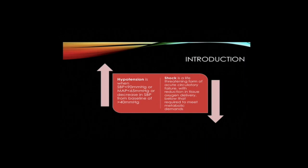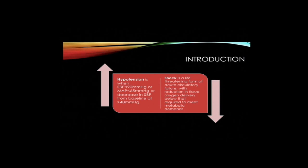Shock is a life-threatening form of acute circulatory failure in which there is reduction in tissue oxygen delivery below that required to meet metabolic demands. This imbalance in oxygen delivery and demand results in tissue hypoxia and lactate acidosis. If not reversed, it leads to progressive cellular injury, multi-organ failure, and death.